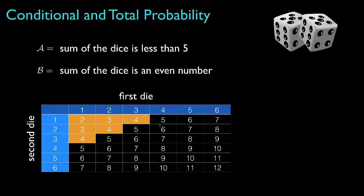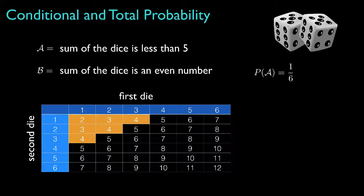There are 36 possible sums, and six of those are less than five. Therefore, the probability for event A — that the sum of the dice is less than five — is equal to six out of 36, or one out of six.